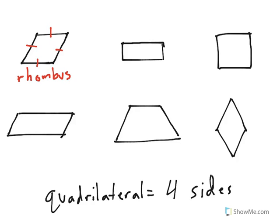Moving along, I can see that we have a shape that has opposite sides of equal length. The top and bottom are equal length, and the right and left are equal length, and it has four right angles. That shape is what we call a rectangle. Opposite sides are equal length, four right angles is a rectangle.